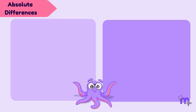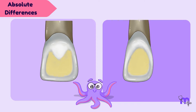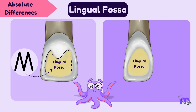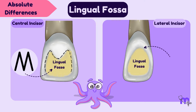Now let's rotate both teeth to view from the lingual aspect, where the lingual fossa shows an absolute difference. The fossa appears relatively shallow with an M-shaped configuration in the maxillary central. However, it is more pronounced in the lateral incisor, forming an inverted V-shape.